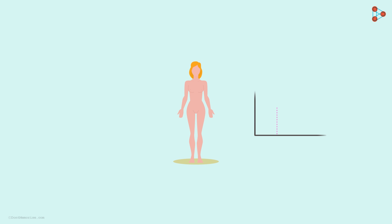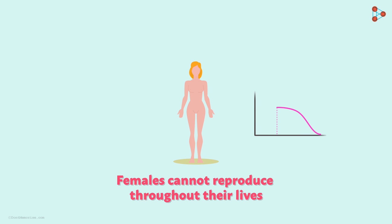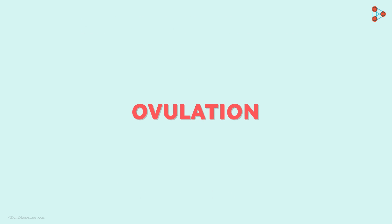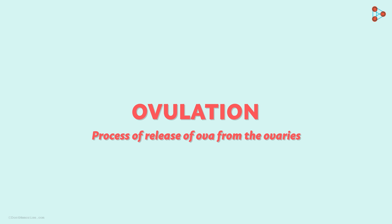The case of females is completely different — females cannot reproduce throughout their lives, so the term 'reproductive phase' holds true in their case. The simplest answer to why this is so is the process of ovulation, which is the release of ova from the ovaries.